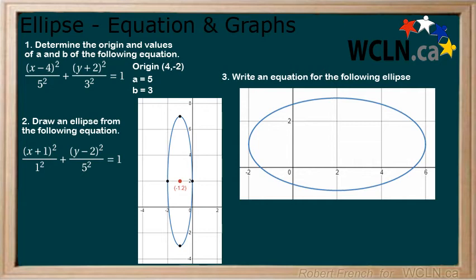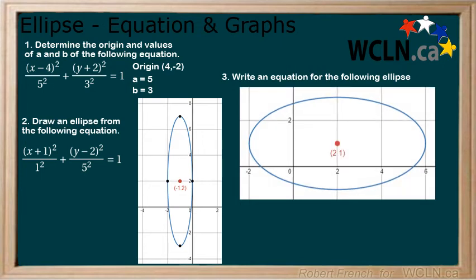Last, write the equation of the following ellipse. First, find the origin of the ellipse. We see that it is at the point 2, 1. Draw this point in to help with getting the values of a and b.